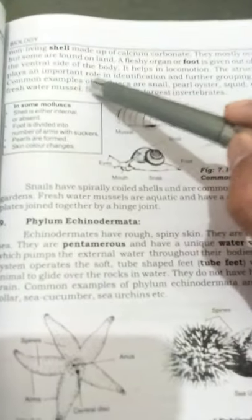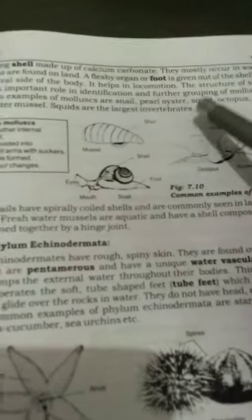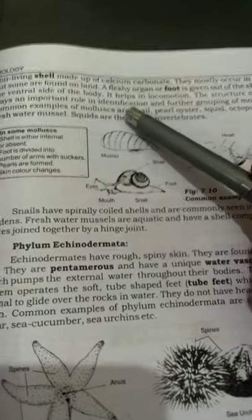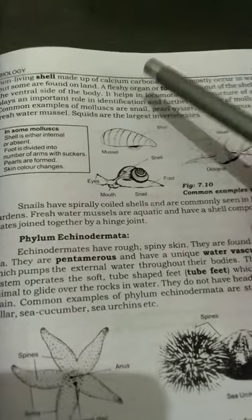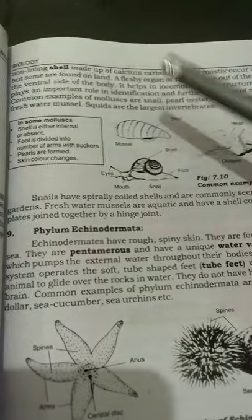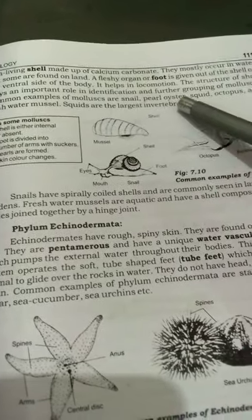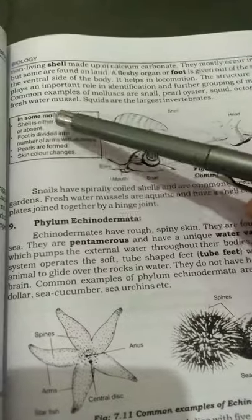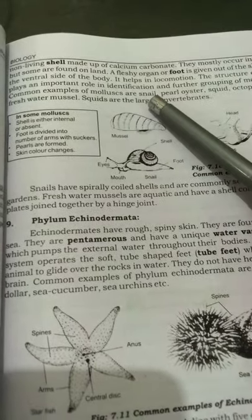The structure of the shell plays an important role in the identification and further grouping of mollusks — it helps identify the members of the group. Common examples of mollusks are snail, pearl oyster, squid, octopus, and freshwater mussels.